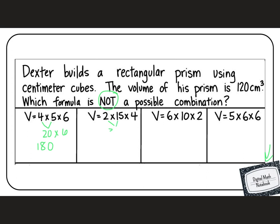V = 2 x 15 x 4. 2 times 15 is 30. Times 4, 3 times 4 is 12. And add our 0. Ooh, that one might be a winner.